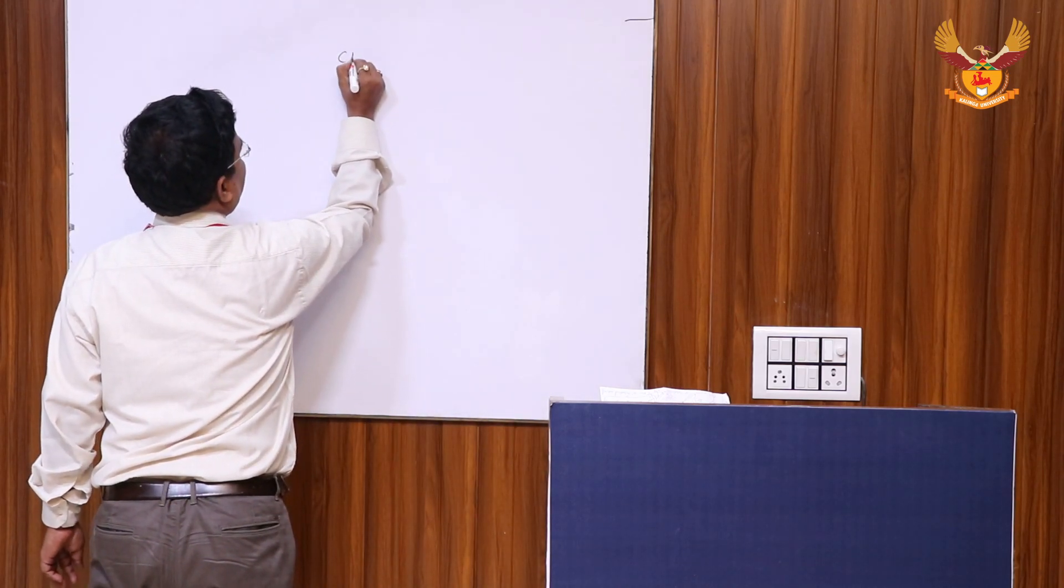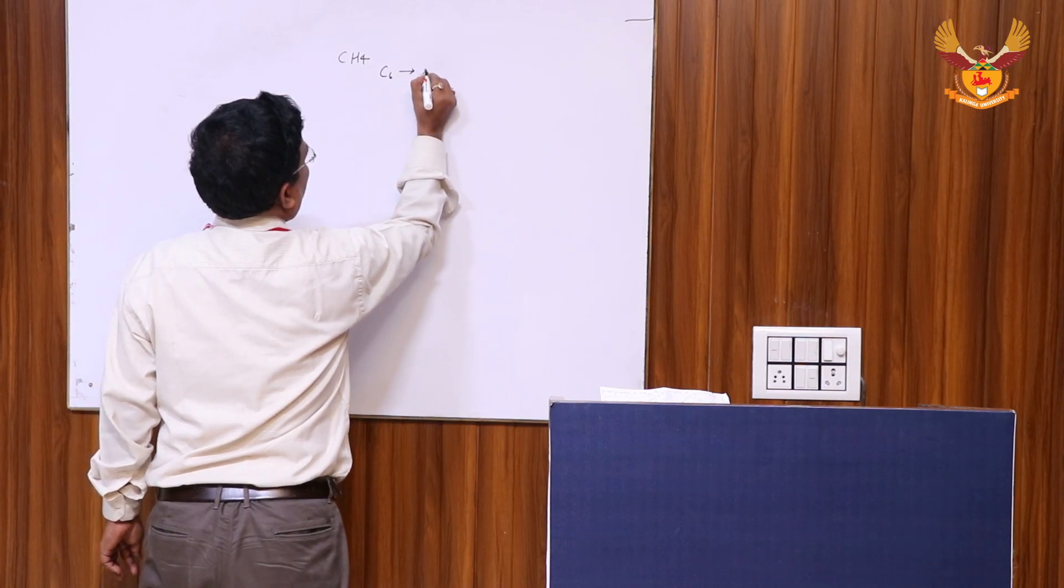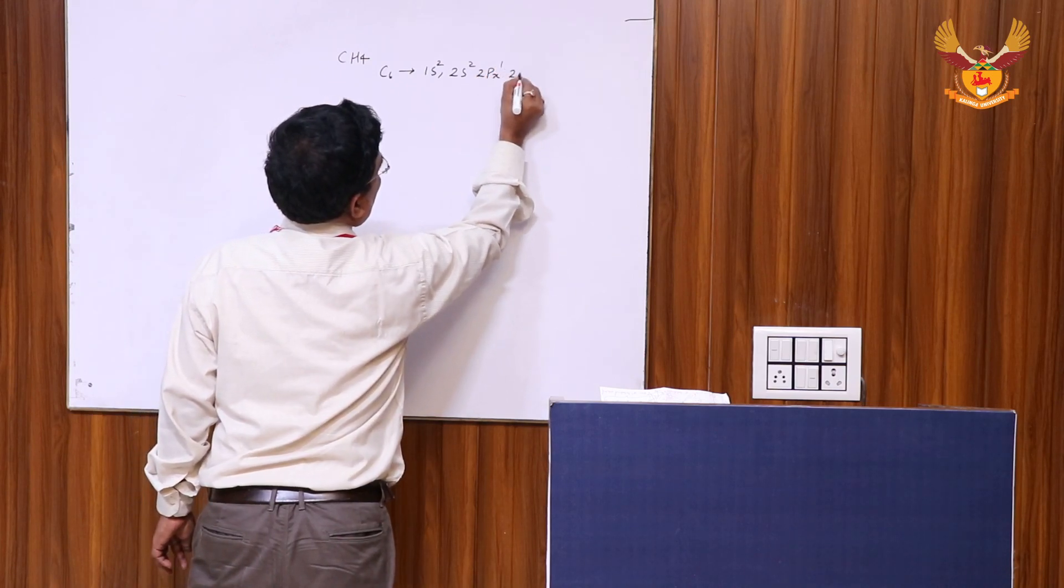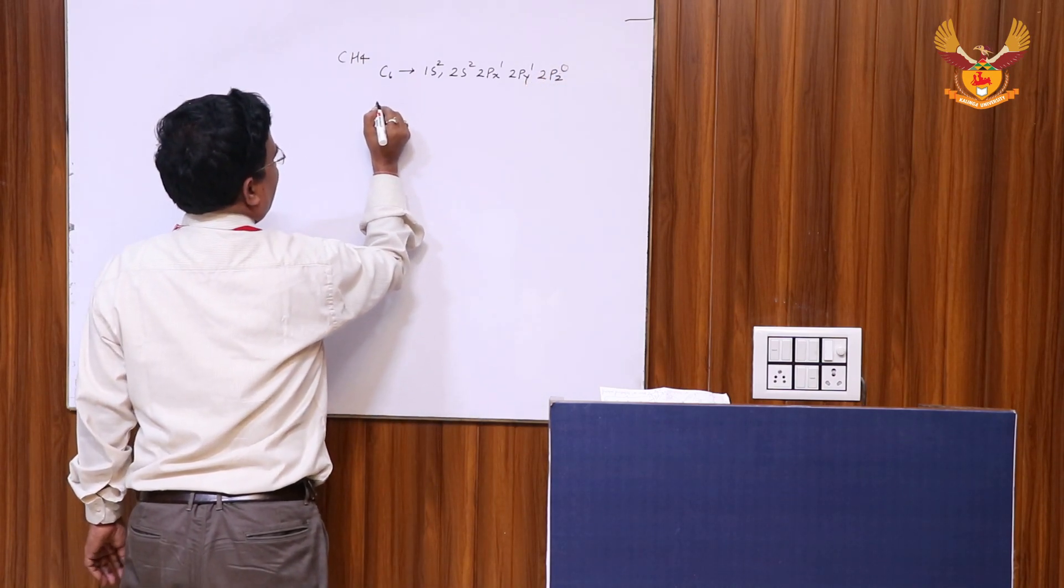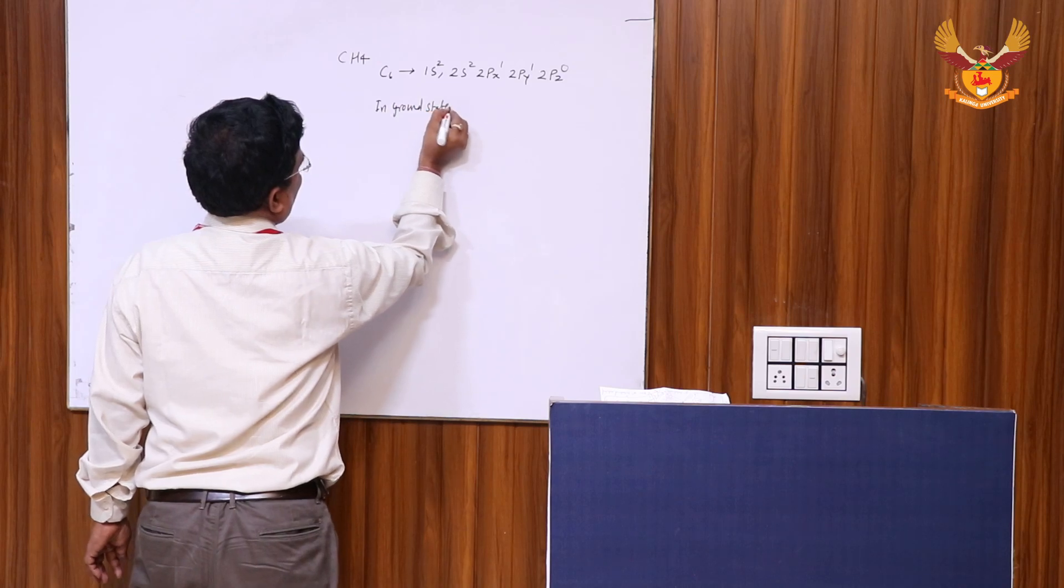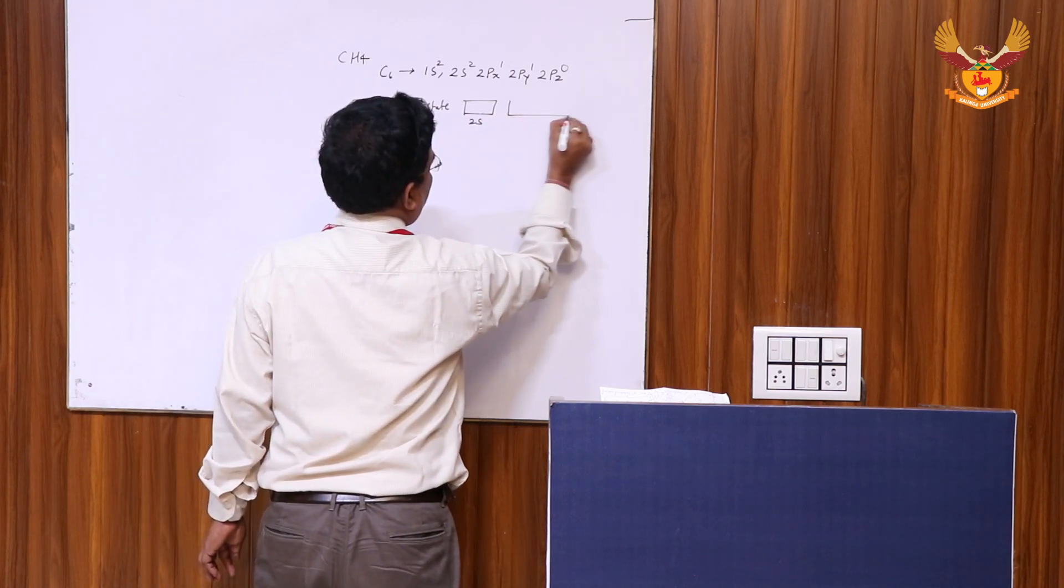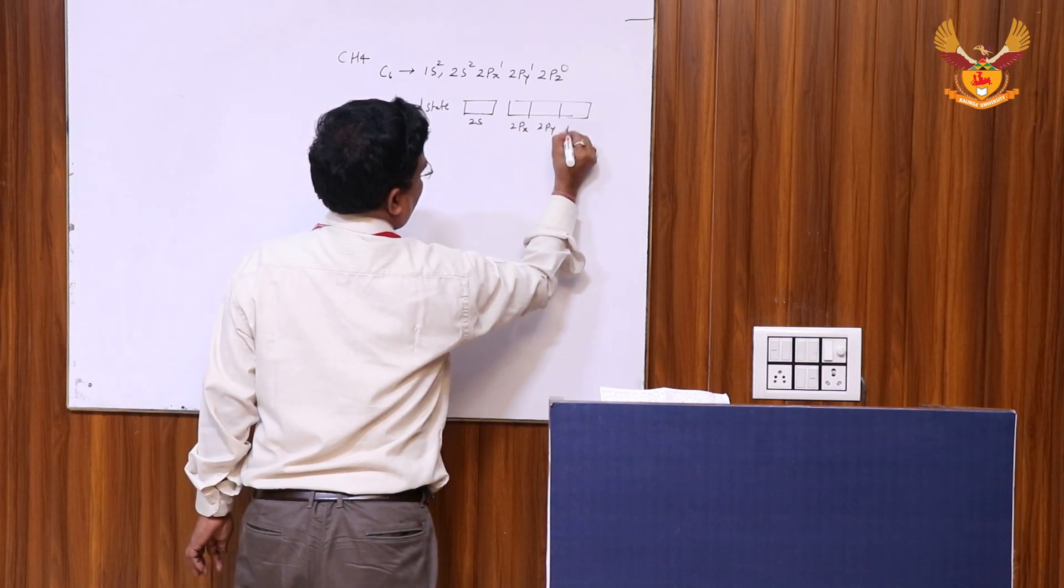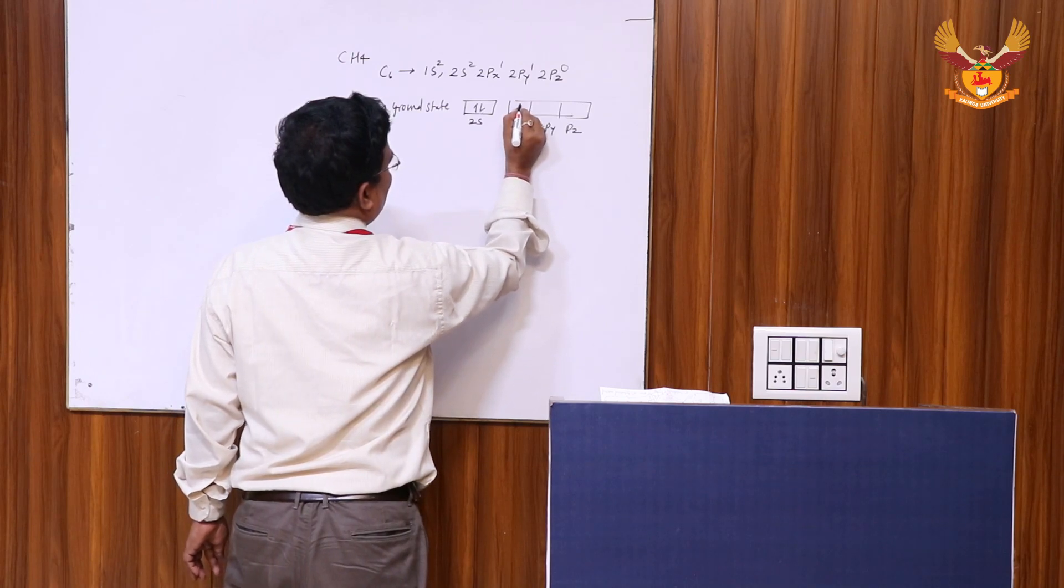The electronic configuration of carbon is C6: 1s2, 2s2, 2px1, 2py1, and 2pz0 in ground state. In box diagram, the filling of electrons is as below: here in 2s orbital two electrons are filled, and in 2px one electron and 2py one electron.